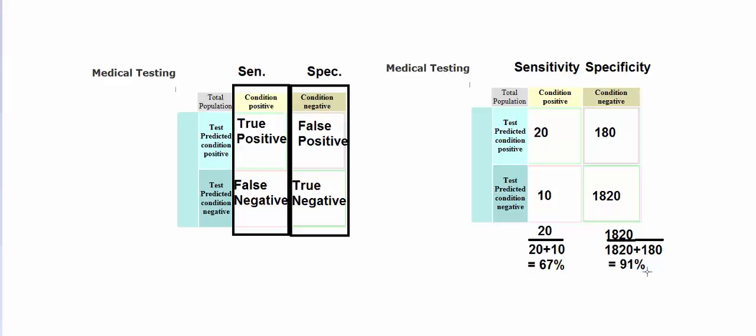Sensitivity and specificity are very helpful when you're analyzing a test — when you're trying to decide whether this is a good test or a weak test. However, they are not very helpful to the patient sitting in the waiting room, because they require a person to know whether they have a condition or not. When I go get a flu test, I don't know if I have the flu. I don't know if I'm condition positive or condition negative, so getting a negative test doesn't really help me know whether I'm getting a false negative or a true negative.